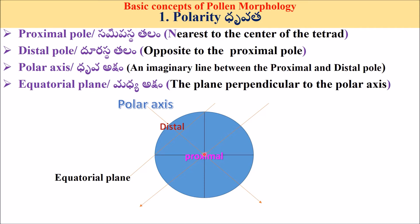The proximal pole is the pole nearest to the center point of the tetrad. The distal pole is opposite to the proximal pole. The polar axis is an imaginary line between the proximal and the distal pole.